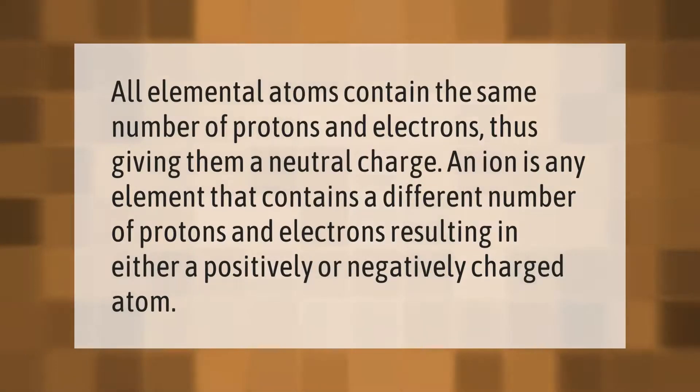All elemental atoms contain the same number of protons and electrons, thus giving them a neutral charge. An ion is any element that contains a different number of protons and electrons, resulting in either a positively or negatively charged atom.